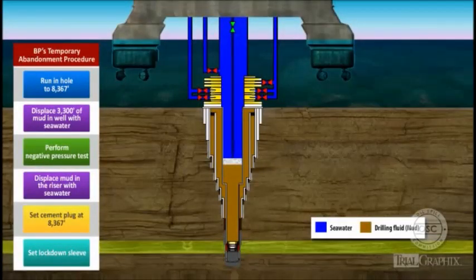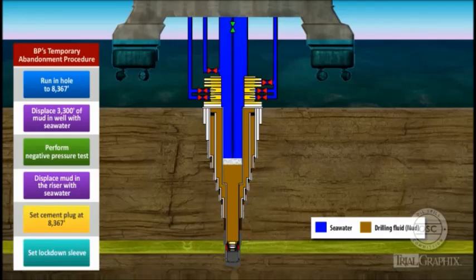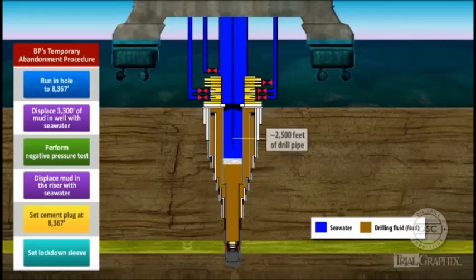BP's engineers developed the Macondo Temporary Abandonment procedure by reasoning backwards. The engineers were concerned that any operations done after setting the lockdown sleeve might damage the sleeve, so they would set the lockdown sleeve last. Setting the lockdown sleeve required 100,000 pounds of downward force. They would generate that weight by hanging approximately 2,500 feet of drill pipe underneath the sleeve. To leave room for that drill pipe, they would set the cement plug even farther down in the well, 3,000 feet below the mud line.